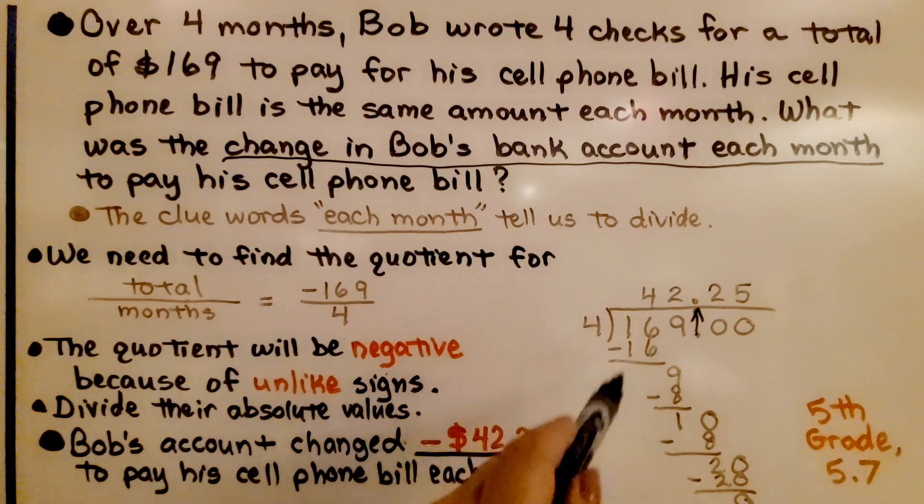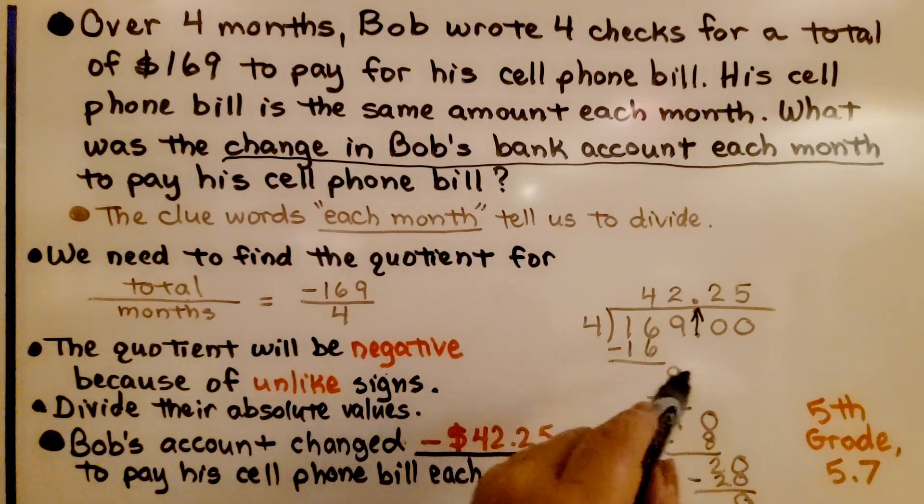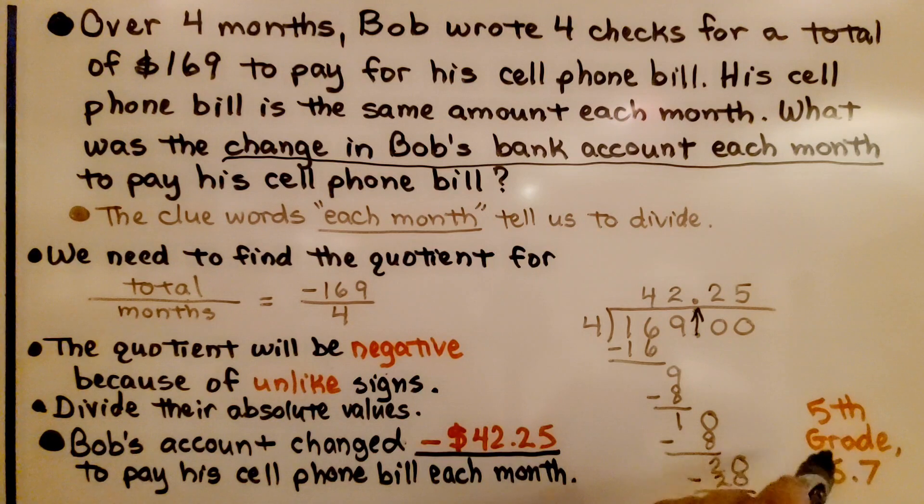If you don't remember how to do long division with decimals, I'm going to have a link to 5th Grade Math 5.7 that will review it very quickly for you. We know Bob's account changed by negative $42.25 to pay his cell phone bill each month.